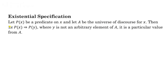Now, Existential Specification: let P(x) be a predicate on x and let A be the universe of discourse. Then 'there exists x, P(x)' tautologically implies P(y), where y is NOT an arbitrary element of A. This is very important — y is not an arbitrary element; it is a particular value from A, and it may be one or more than one value.